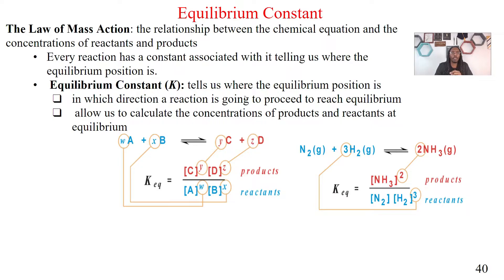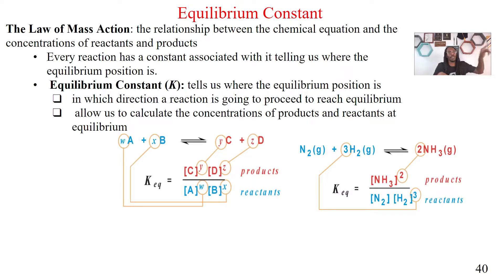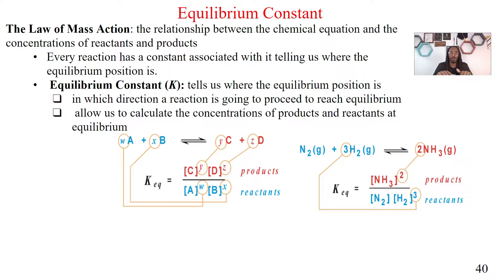The equilibrium constant is going to tell us where our equilibrium position is — basically the direction in which our reaction is going, whether we're going forward or backward. As well, the equilibrium constant is going to help me calculate the concentrations of my products and reactants when it's at equilibrium. If it's not at equilibrium, the equilibrium constant cannot help me — you have to be at equilibrium in order to calculate concentrations.